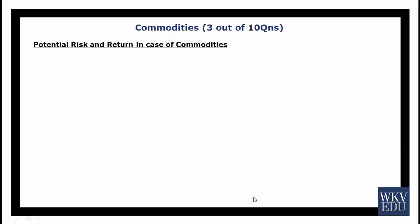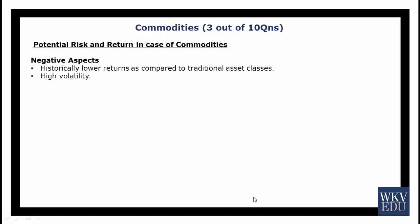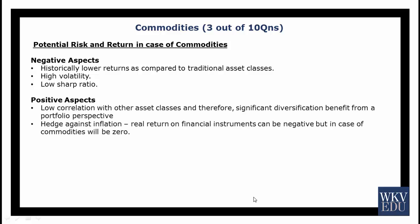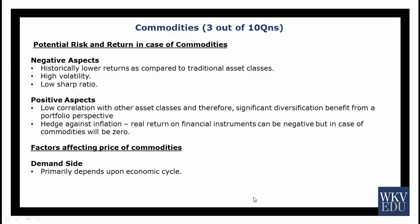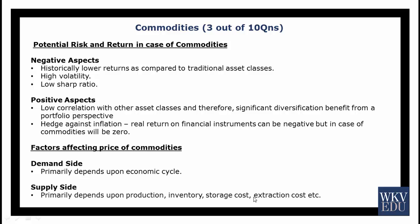The potential risks and returns in case of commodities: negative aspects include lower returns compared to traditional asset classes, high volatility, and a very low Sharpe ratio. Positive aspects include low correlation with other asset classes, significant diversification benefits, and a hedge against inflation. On the demand side, commodities depend on the economic and business cycle. On the supply side, they depend on production, inventory, storage cost, and extraction cost. In the short run, supply may be highly inelastic such that if demand shoots up, prices will rapidly rise.